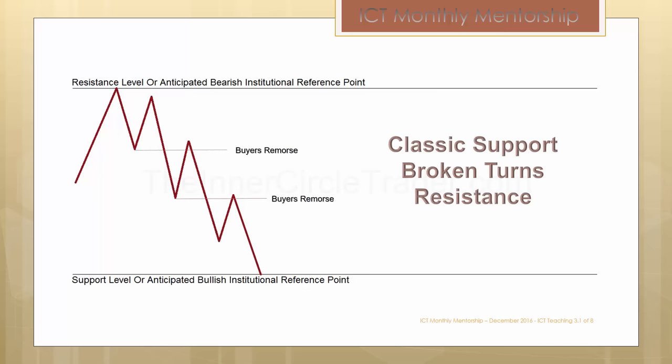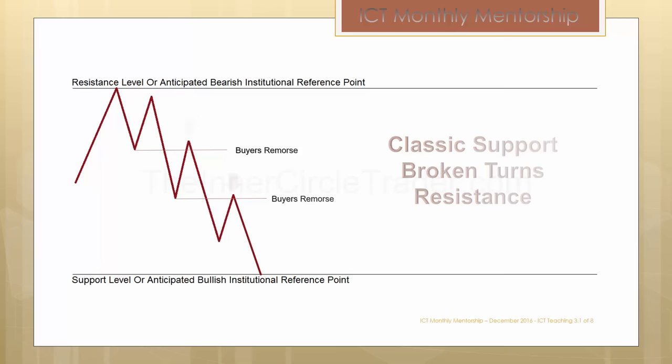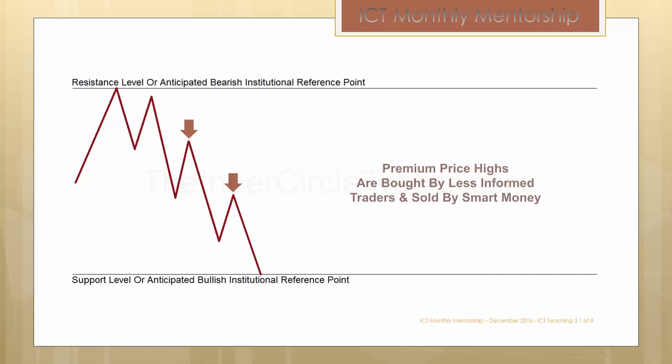What we're seeing is the classic support broken turns resistance. Every time price moves back to an old low, what's actually happening is referred to as buyer's remorse. The buyers at the previous short-term low that saw a short-term pop in their favor, then saw the market break below that low, are remorseful for buying it when price gets back to that level — so they bail. On an institutional level, smart money understands these short-term fluctuations and can drive price through manipulation. If they're going to manipulate price with large orders, they're going to want to liquidate their positions to avoid losses. This gives them the opportunity to mitigate those losses. Premium price highs are bought by less informed traders and sold by smart money.